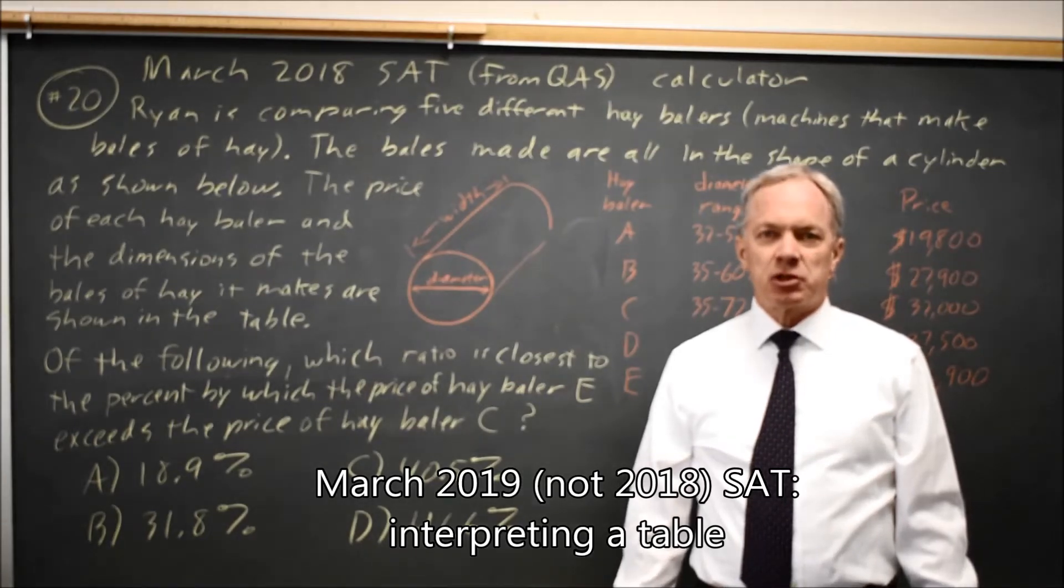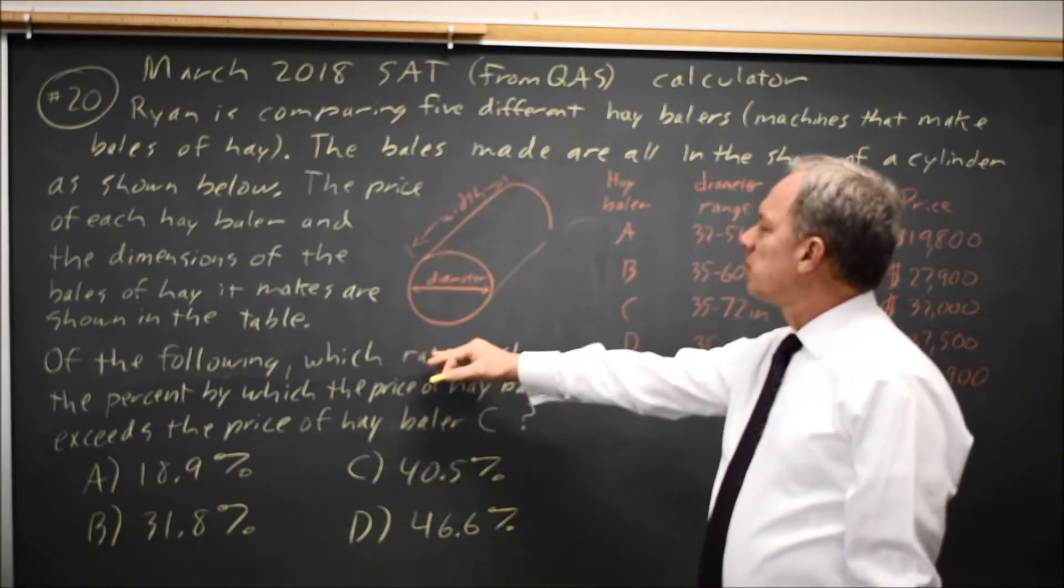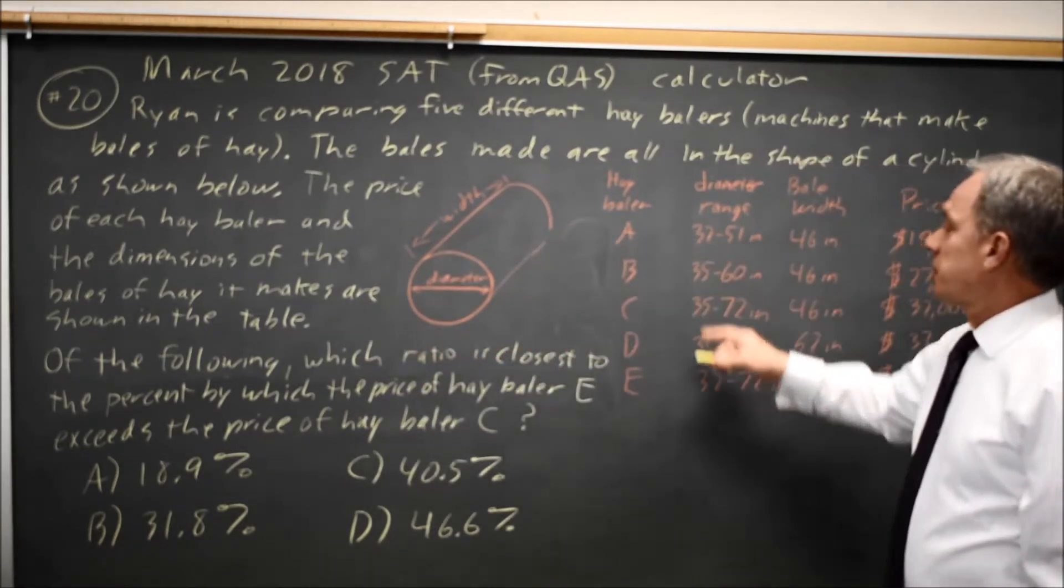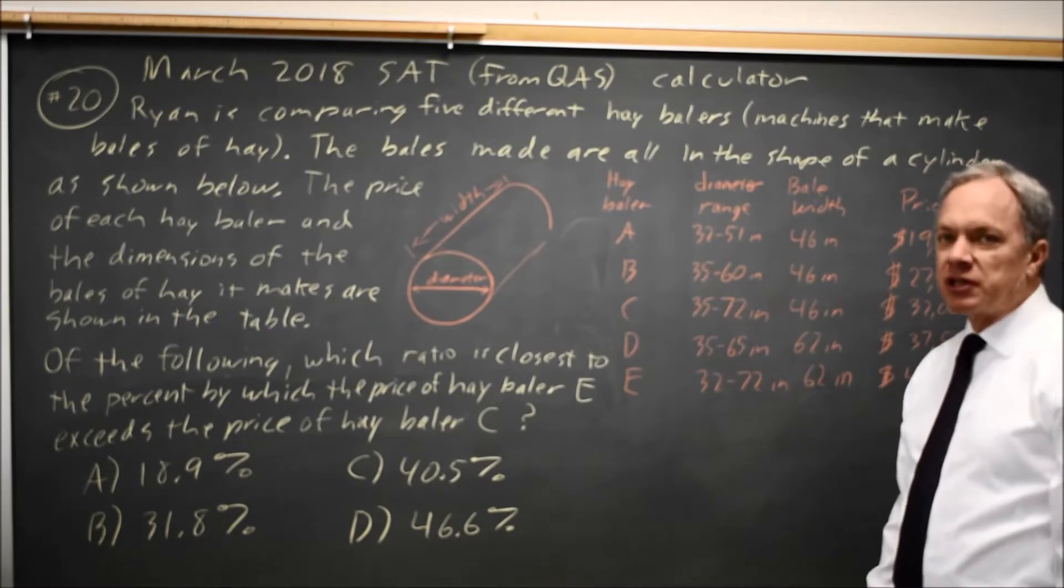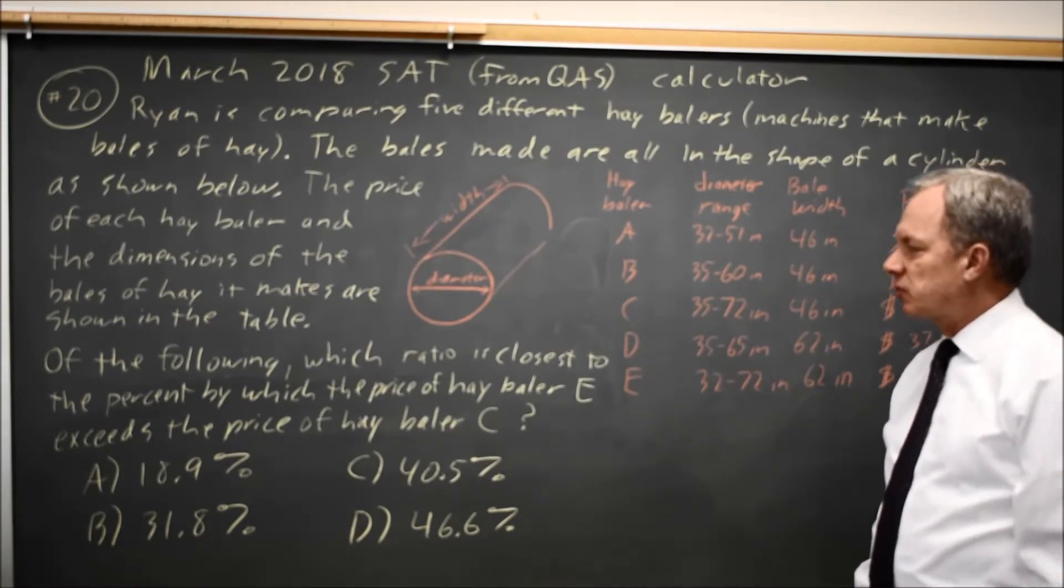This is calculator question number 20 from the March 2019 SAT. College Board is again asking us a word problem involving a diagram and a table where they want us to find the correct numbers in the table to perform the mathematics they're asking for.